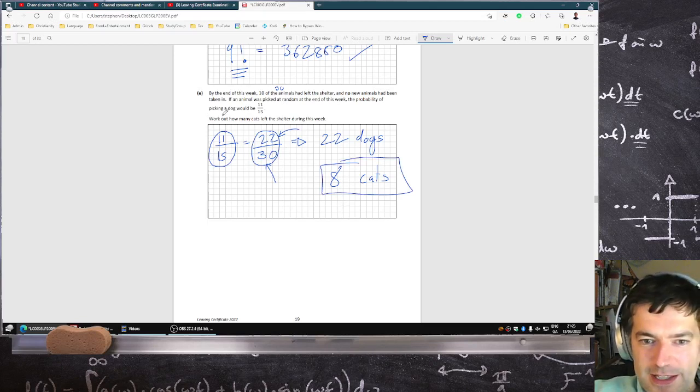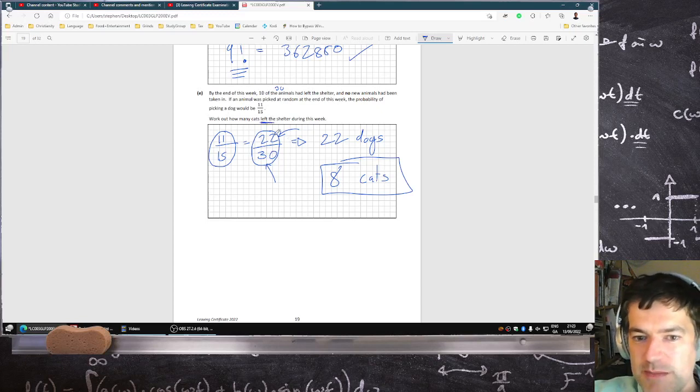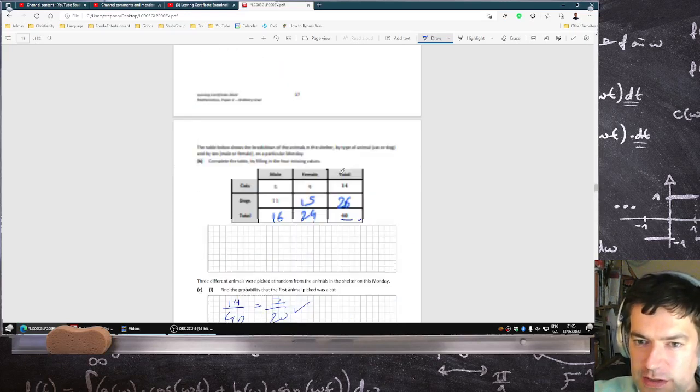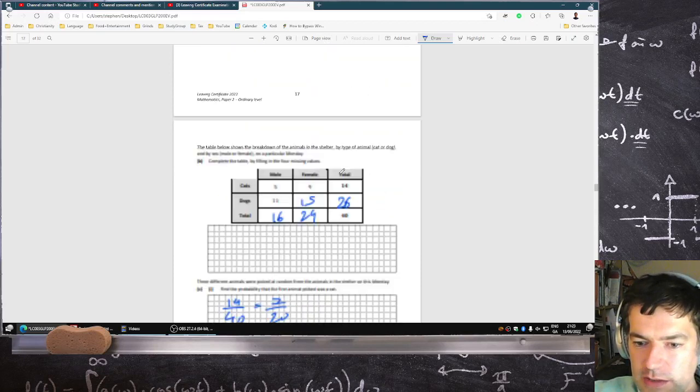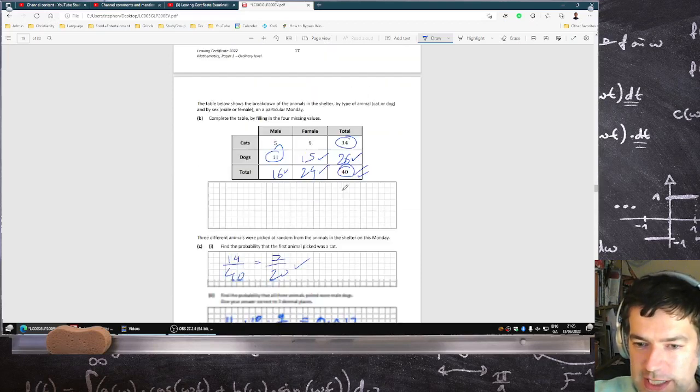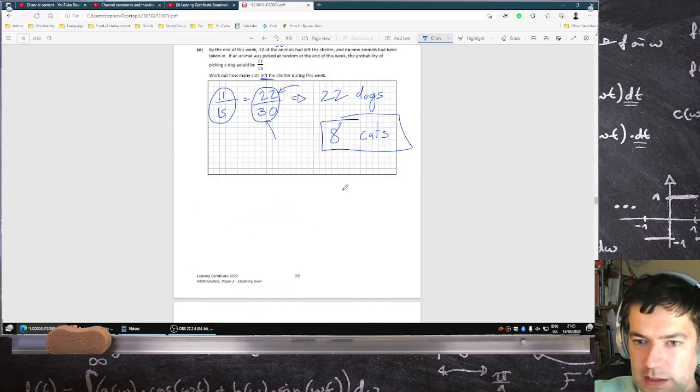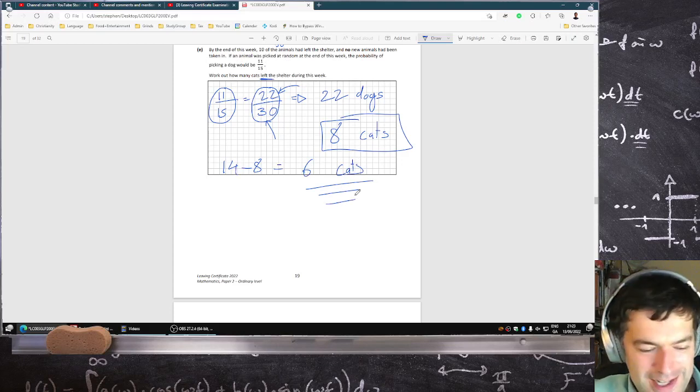Here's my mistake. The question said how many cats left the shelter. I misread it as how many cats were left in the shelter. If there's eight cats left in the shelter and you had 14 to begin with, it's actually 14 minus eight, which is six cats. Thank you for spotting that.